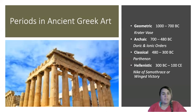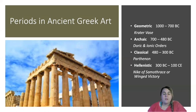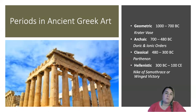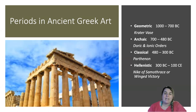Now looking at the periods in ancient Greek art: the geometric period is 1000 to 700 BC, where we'll look at the crater vase. The archaic period is 700 to 480 BC, where we'll look at the Doric and Ionic orders. The classical period is 480 to 300 BC, where we'll look at the Parthenon — probably one of the most famous works of architecture in the world. And the Hellenistic period is 300 BC to roughly 100 AD, where we'll look at Nike of Samothrace, also known as Winged Victory.